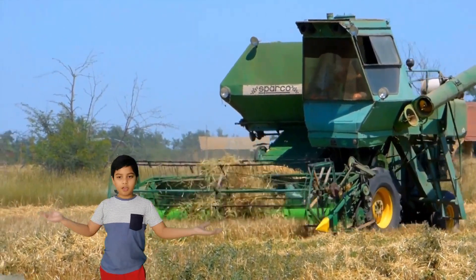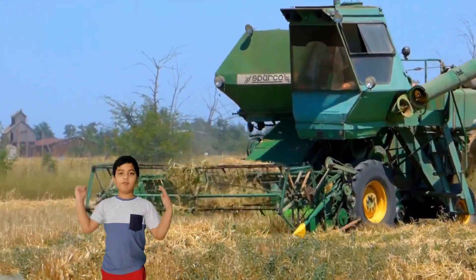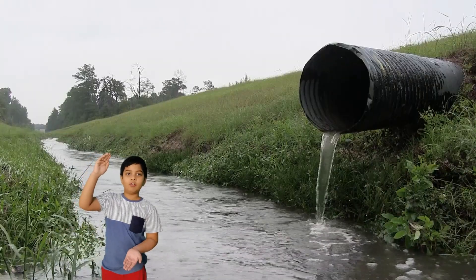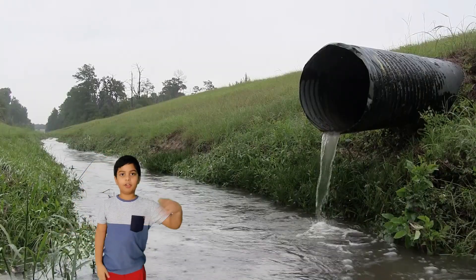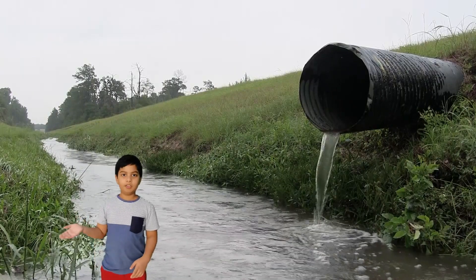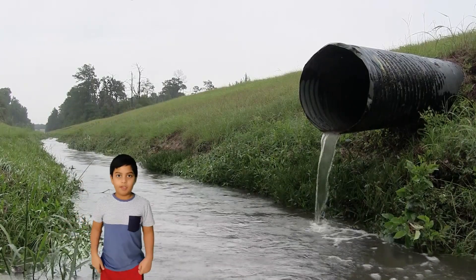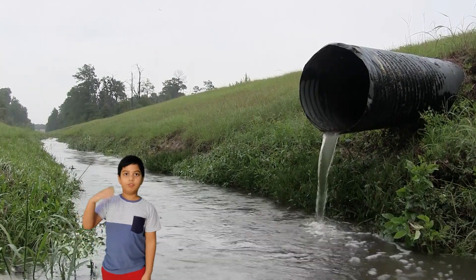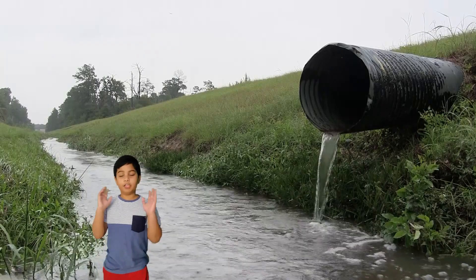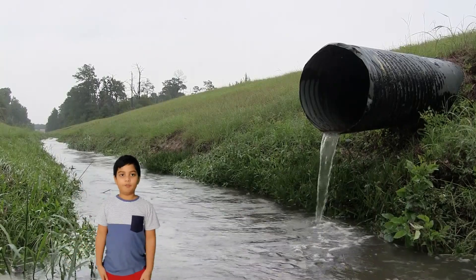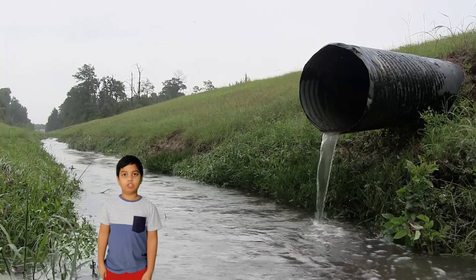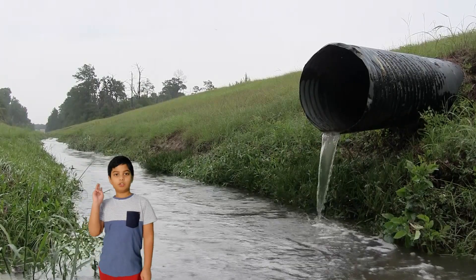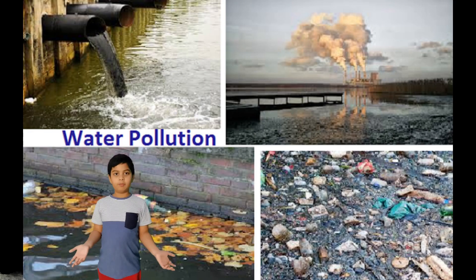Now let's talk about the effects of land pollution. Pollution makes the quality of land, water, or air lower. The plants that grow in polluted soil also have low quality, and the animals that feed on them often fall ill. The main effect of land pollution is soil erosion. Now we are going to discuss the third type of pollution: water pollution.